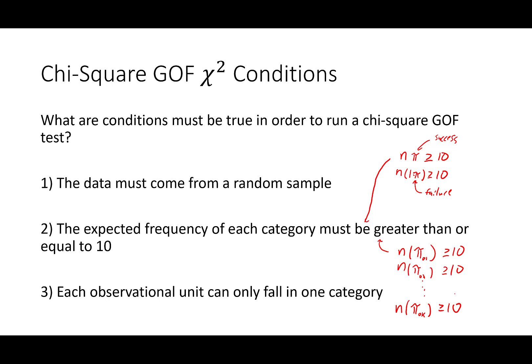And lastly, each observation can only fall into one category. So for instance, we can't have a family from our last problem fall into a high-income family and a middle-income family. You can't fall into more than one category. Each observation can only be in one and in one group only.